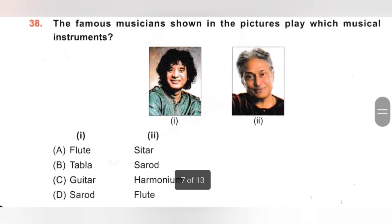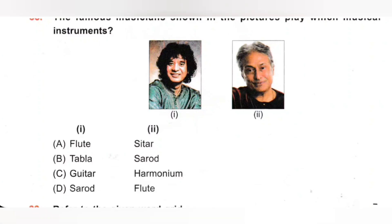38th. The famous musicians shown in the picture play which musical instruments? One is Ustad Zakir Hussain and two is Ustad Amjad Ali Khan. They are famous for Tabla and Sarod respectively. Ustad Zakir Hussain is famous for Tabla and Ustad Amjad Ali Khan is famous for Sarod. Option B is the correct answer.